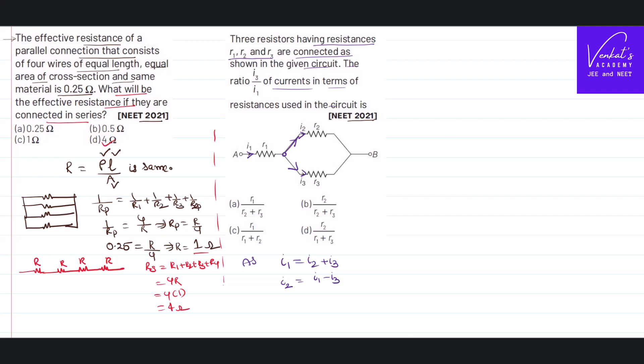Now look at this branch, this branch, and this branch—they are all parallel to each other. You know what happens in parallel: potential difference is same, current is shared.